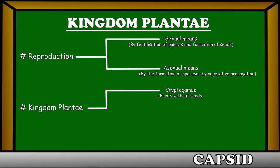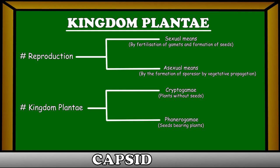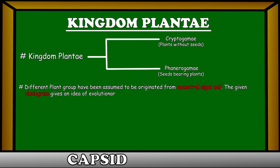The Kingdom Plantae has been further divided into two groups: cryptogamy, where plants do not bear seeds, and phanerogamy, which are the seed-bearing plants.